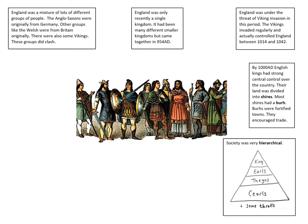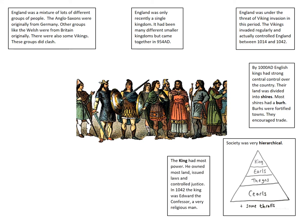That hierarchy had the thralls at the bottom, then the churls above them, then the thanes, and then the earls and the king. The king was at the top with the most power — he owned the most land, issued laws and controlled justice. The last of the Anglo-Saxon kings, the one you need to remember, is Edward the Confessor, who was very religious.